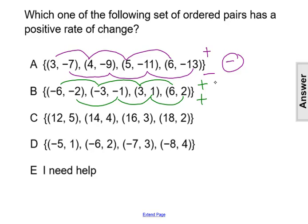So the movement between the x values and the y values matches. It's a positive over a positive, meaning that would create a positive slope and a positive rate of change. Our answer looks like it's set B.